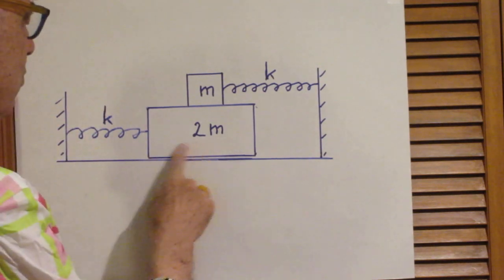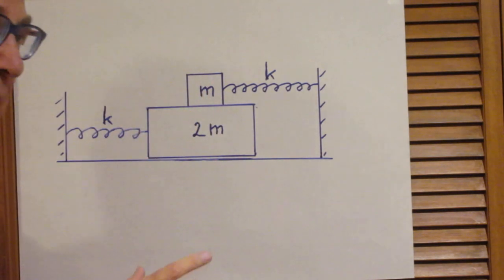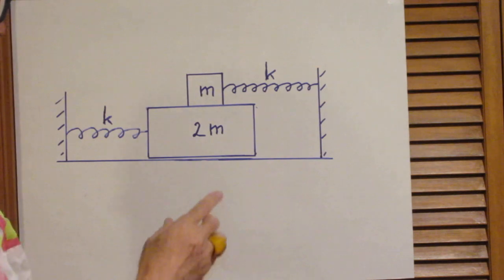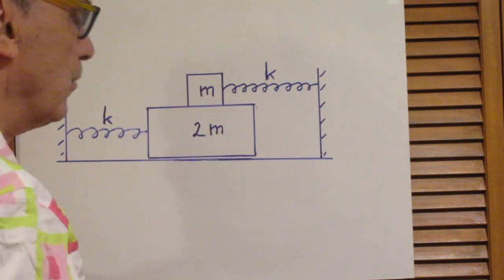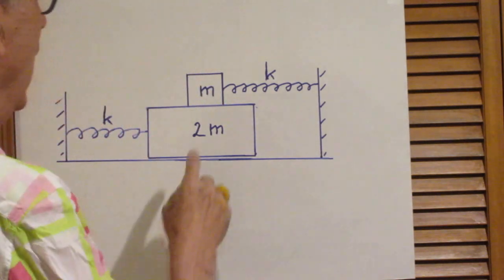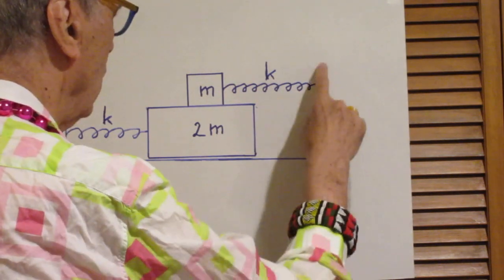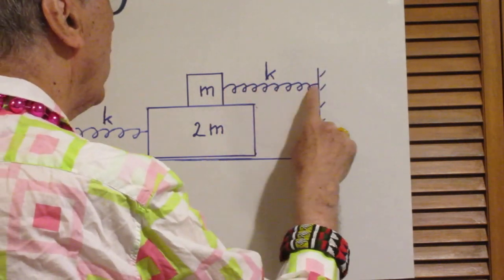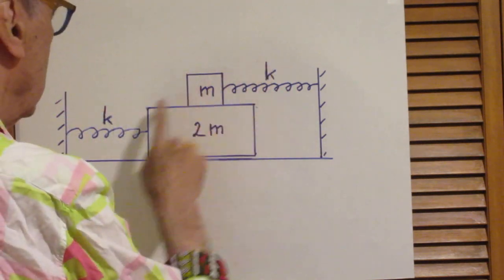On top of this block is another block which has mass m. But there is friction between these two, and the friction coefficient is mu. And this block is connected to this wall with a spring which has the same spring constant k as this spring.